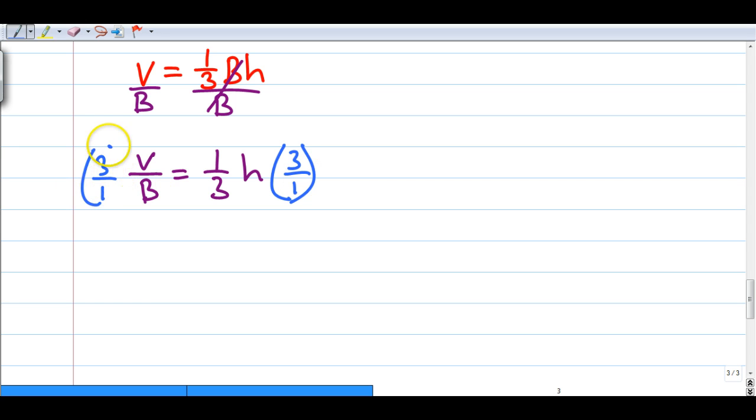So 3 over 1. This clears the 3, clears the 1. So now I'm just left with the H on the right side. If I look over here on the left side, I have 3 times V to make 3V, 1 times B to make B. So my answer is 3V over B equals H.